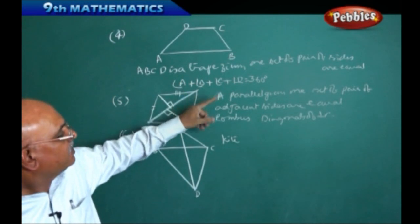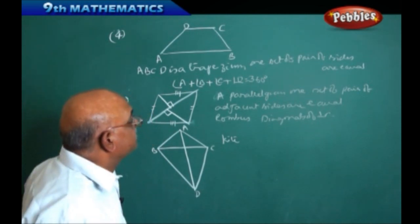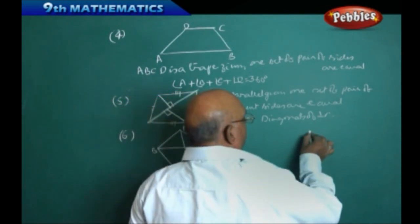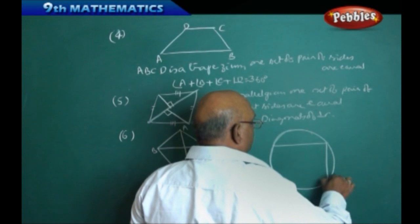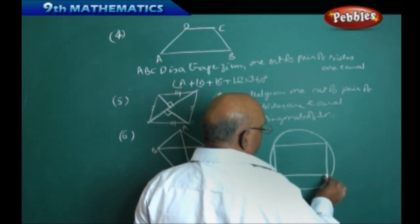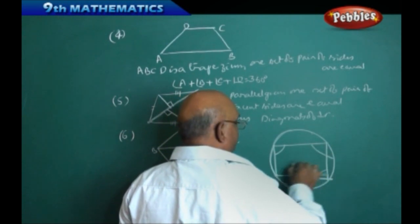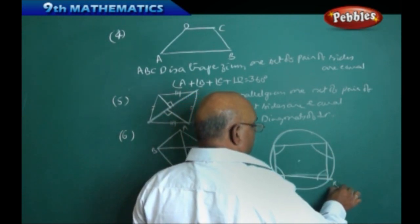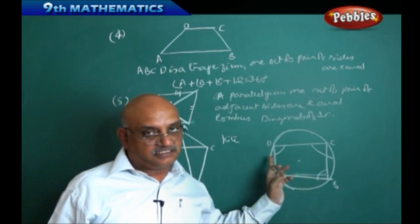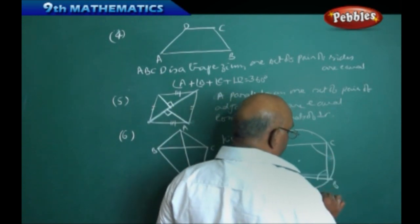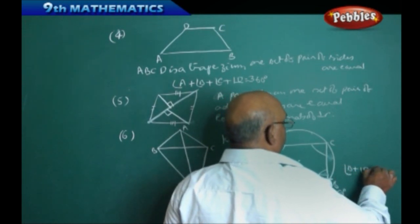Overall, the sum of all angles in any four-sided figure is 360 degrees. In a cyclic quadrilateral — a quadrilateral formed by taking any four points on a circle — the sum of opposite angles equals 180 degrees. That is, angle A plus angle C equals 180 degrees, and angle B plus angle D equals 180 degrees. This is the key property of a cyclic quadrilateral.